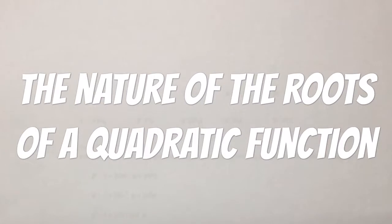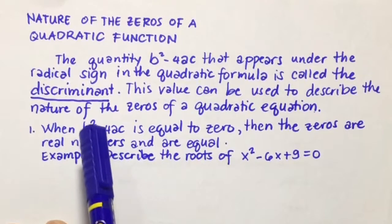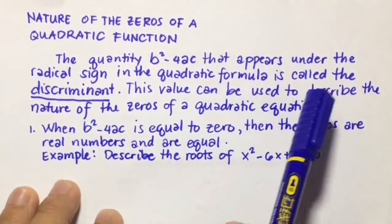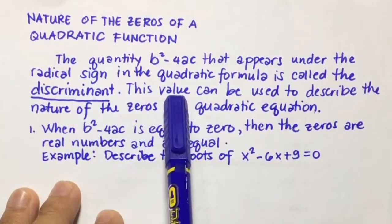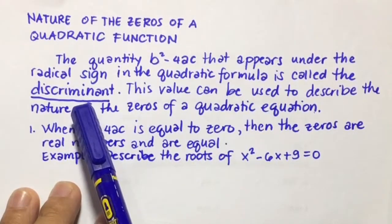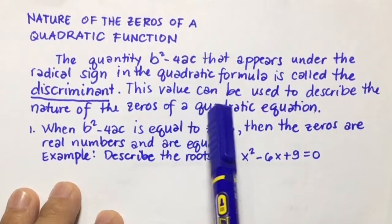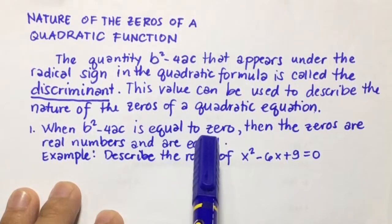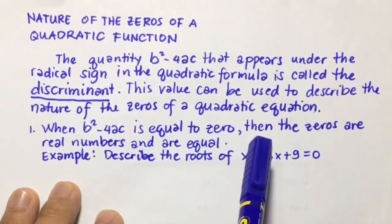Hi guys! In this video, I'm going to discuss the nature of the roots of a quadratic function. The quantity b squared minus 4ac that appears under the radical sign in the quadratic formula is called the discriminant. This value can be used to describe the nature of the zeros of a quadratic equation.